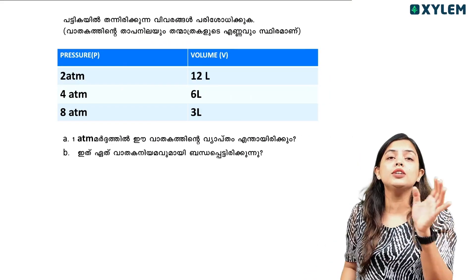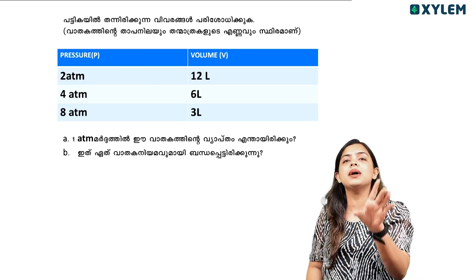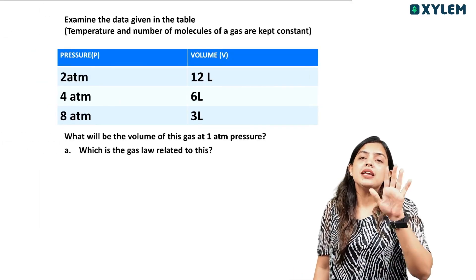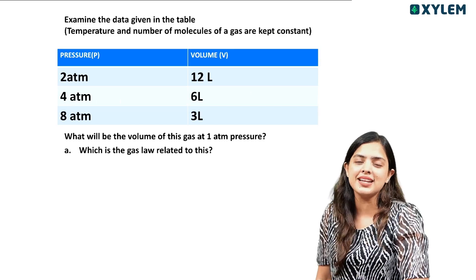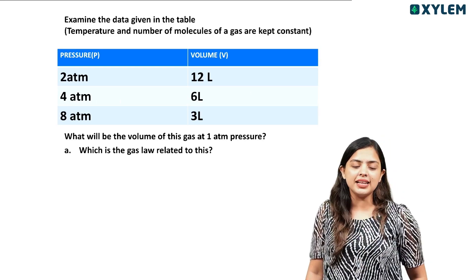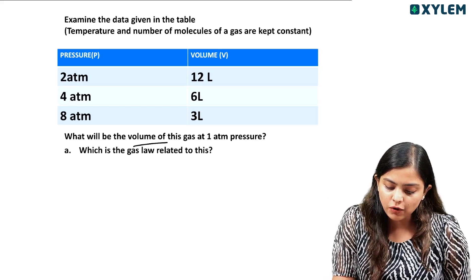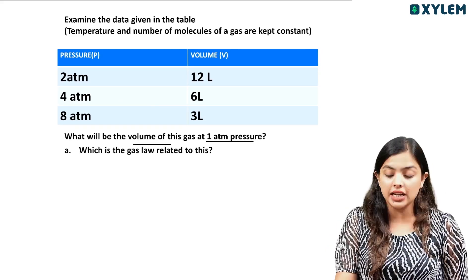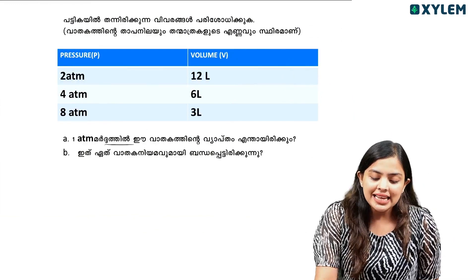What will be the volume of this gas at one atmospheric pressure? What will be the volume of this gas at one atmospheric level?